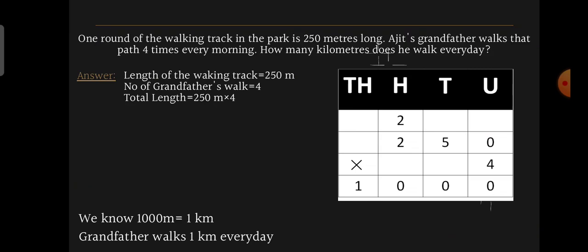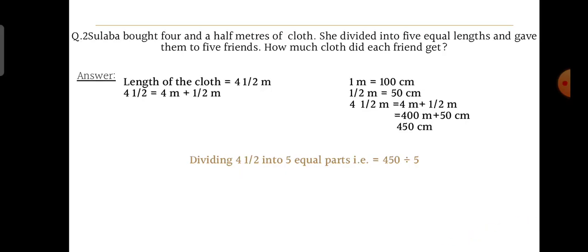One round of the walking track in the park is 250 meters long. Aji's grandfather walks that path four times every morning. How many kilometers does he walk every day? Note: the spelling of 'walking' is written wrong — it should be W-A-L-K-I-N-G. Length of the walking track equals 250 meters, number of times grandfather walks equals 4. Total length: 250 m × 4 = 1000 meters. One thousand meters equals one kilometer, so grandfather walks one kilometer every day.